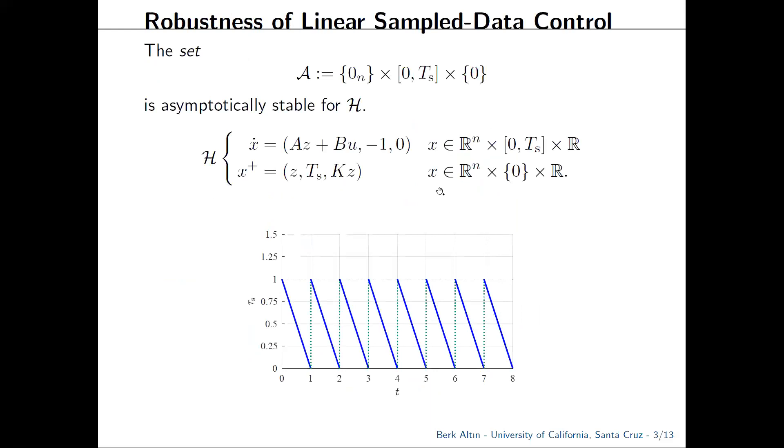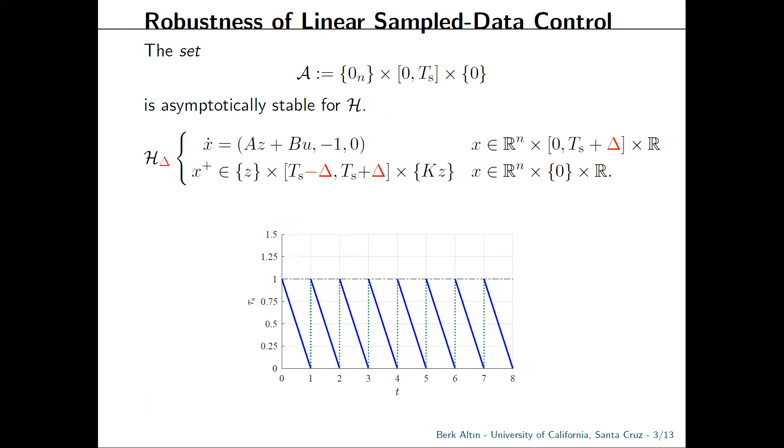Regularity of the closed loop system affords its robustness with respect to not only the usual suspects like disturbance and noise, but also temporal perturbations such as uncertainties on the sampling time. We do this by considering a parametric model H_delta, where delta is a scalar representing uncertainty on the sampling time. Instead of updating the timer to Ts at every sample, we now allow it to go to a delta neighborhood of Ts in a random fashion.